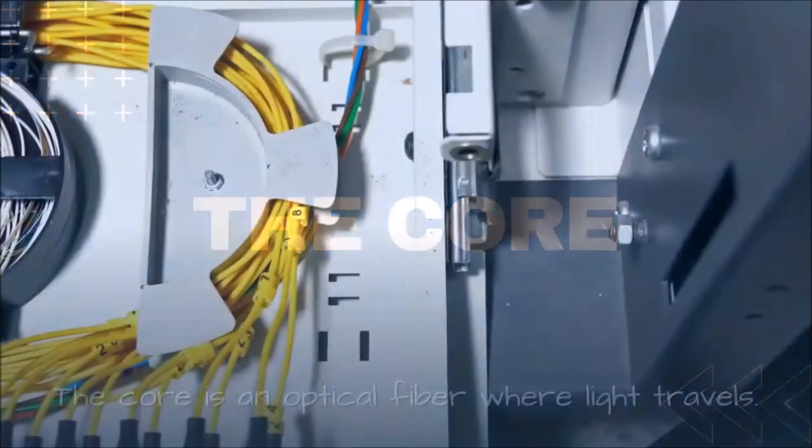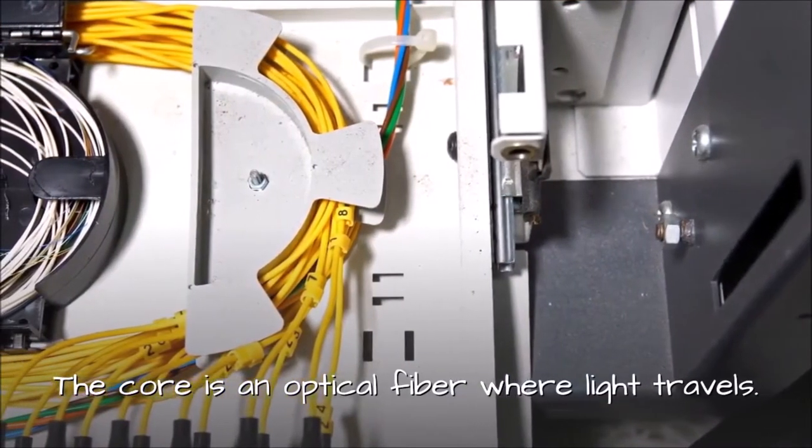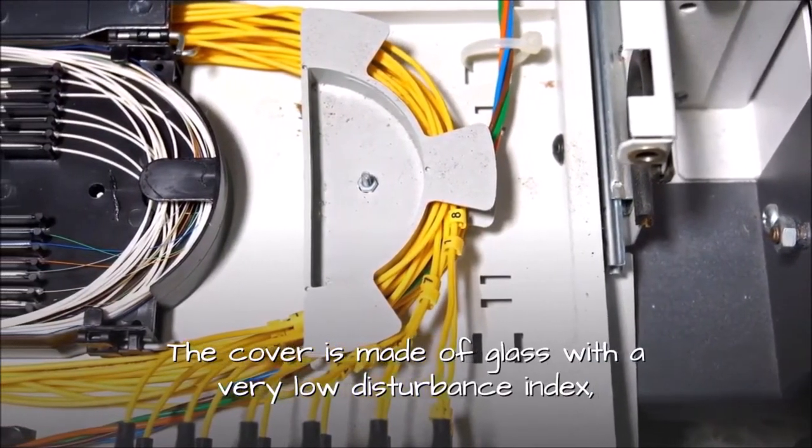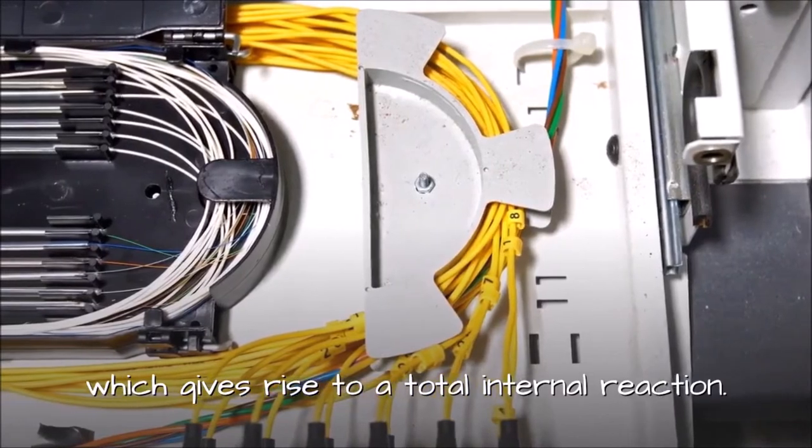One: The core. The core is the part of an optical fiber where light travels. The core is made of glass with a very low refractive index, which gives rise to total internal reflection.